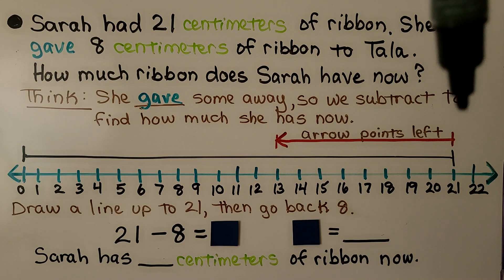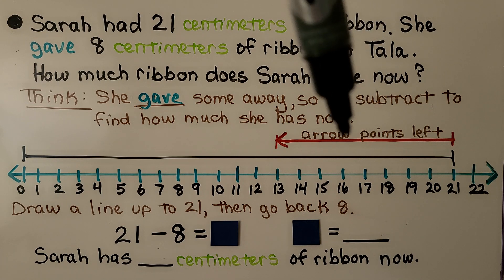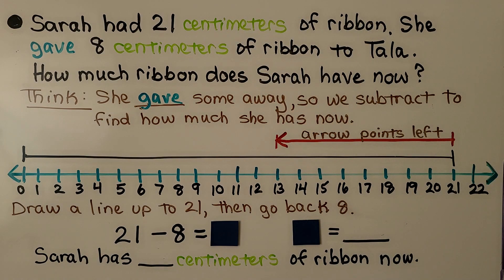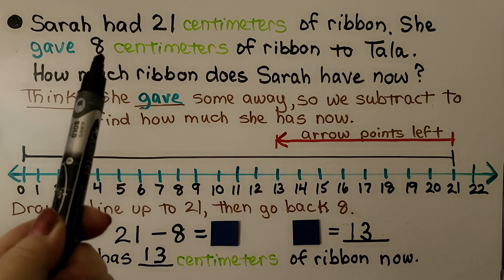Starting at 21, we count back 8. 1, 2, 3, 4, 5, 6, 7, 8. That puts us at 13. Our equation is 21 minus 8 is equal to the square, and the square is equal to 13, which means Sarah has 13 centimeters of ribbon now. Because it was subtraction, our arrow points to the left, and we go back. We went back 8.